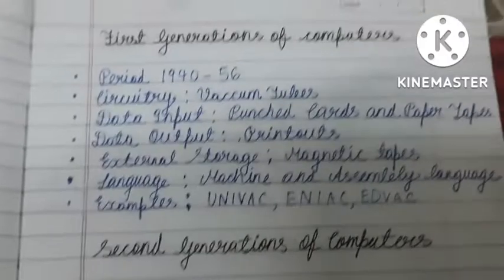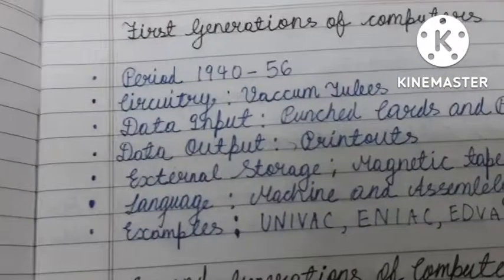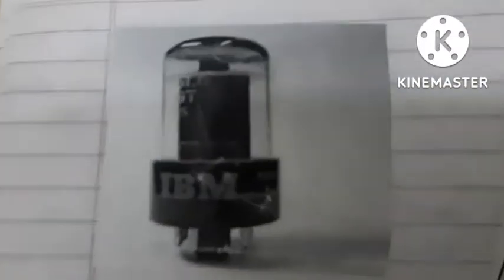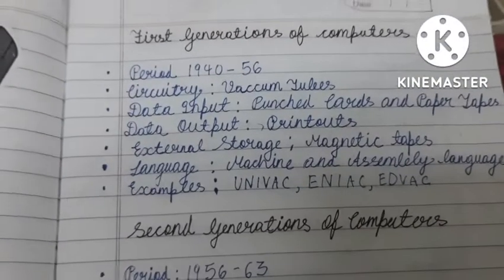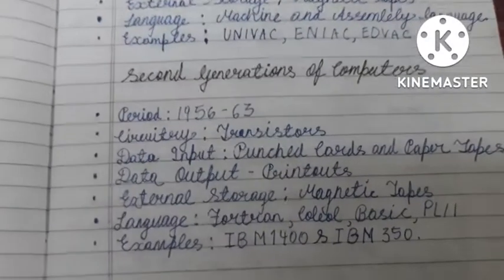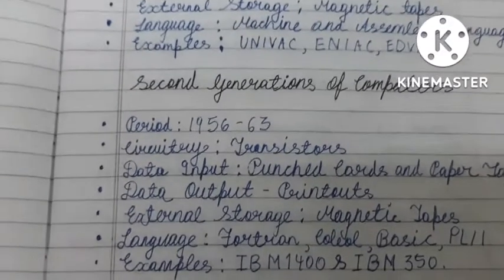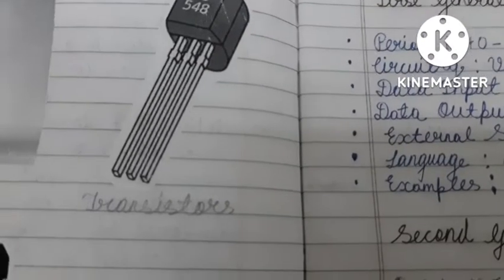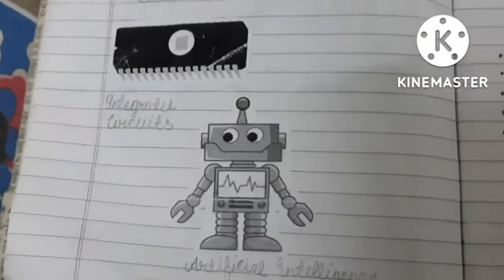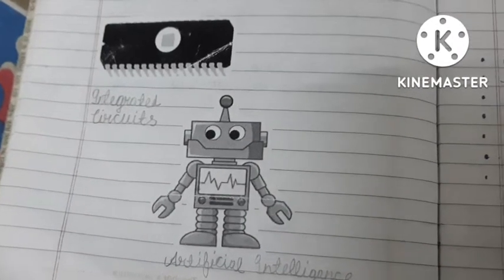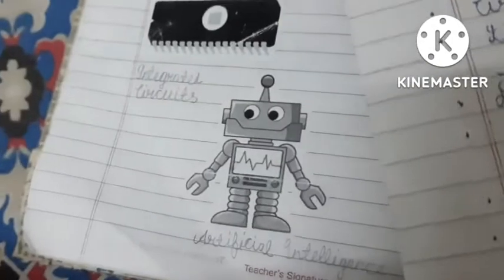Here I have written about the first generation of computers, and for the first generation I have pasted a picture of vacuum tubes. Here I have written about the second and third generation of computers — for the second generation I have pasted a picture of transistors, and for the third generation I have pasted a picture of integrated circuits.